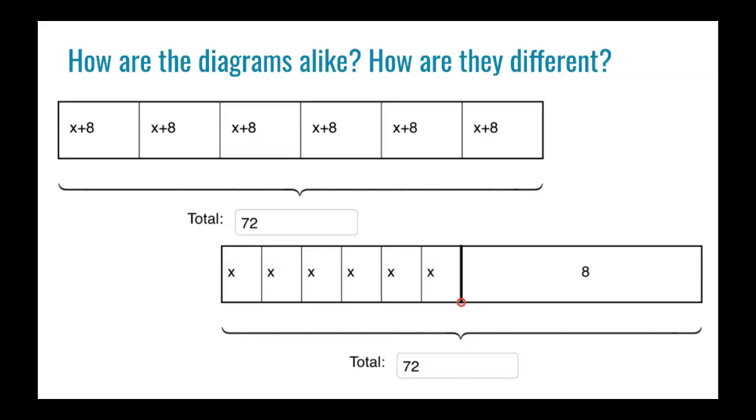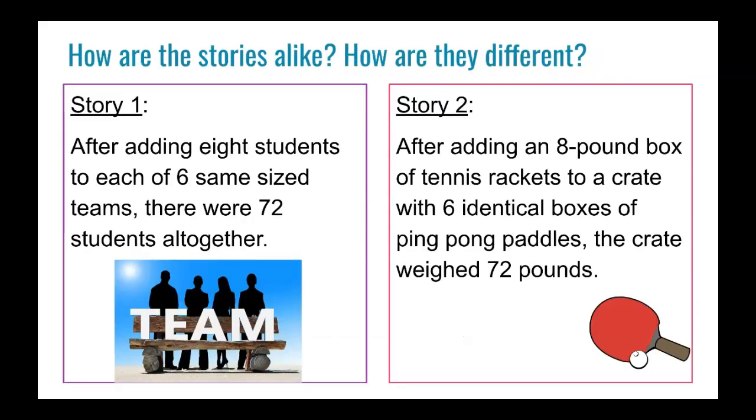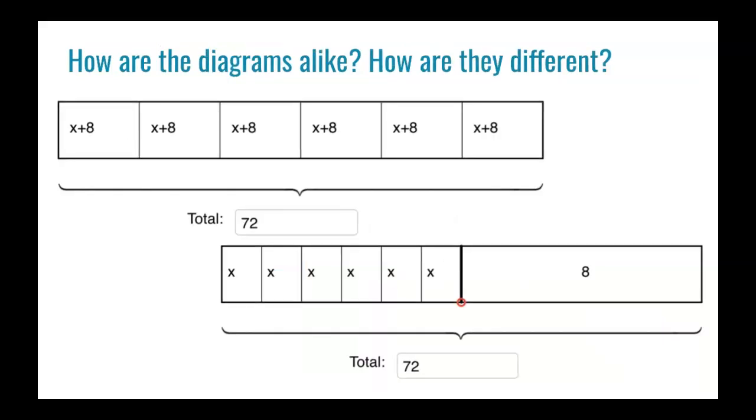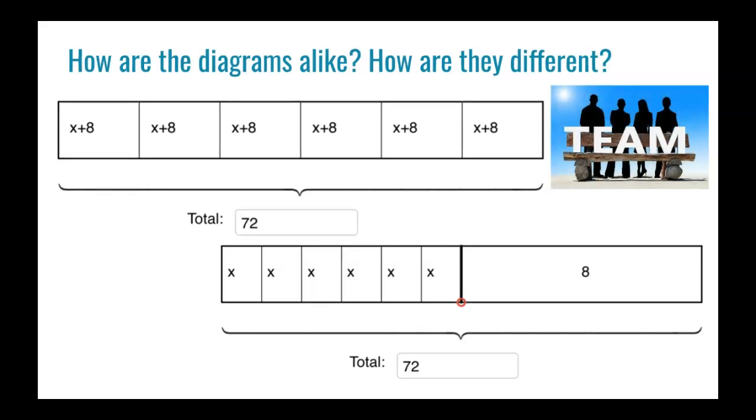But the first one, there's 8 added every single time. And the second one, there's only an 8 added once. So I want you to try to match which one goes with each scenario. So which one matches? Okay, hopefully you noticed the team one goes with the top because 8 are added in each of those 6 teams. And the ping pong situation goes with the bottom because the 8 is only being added once.